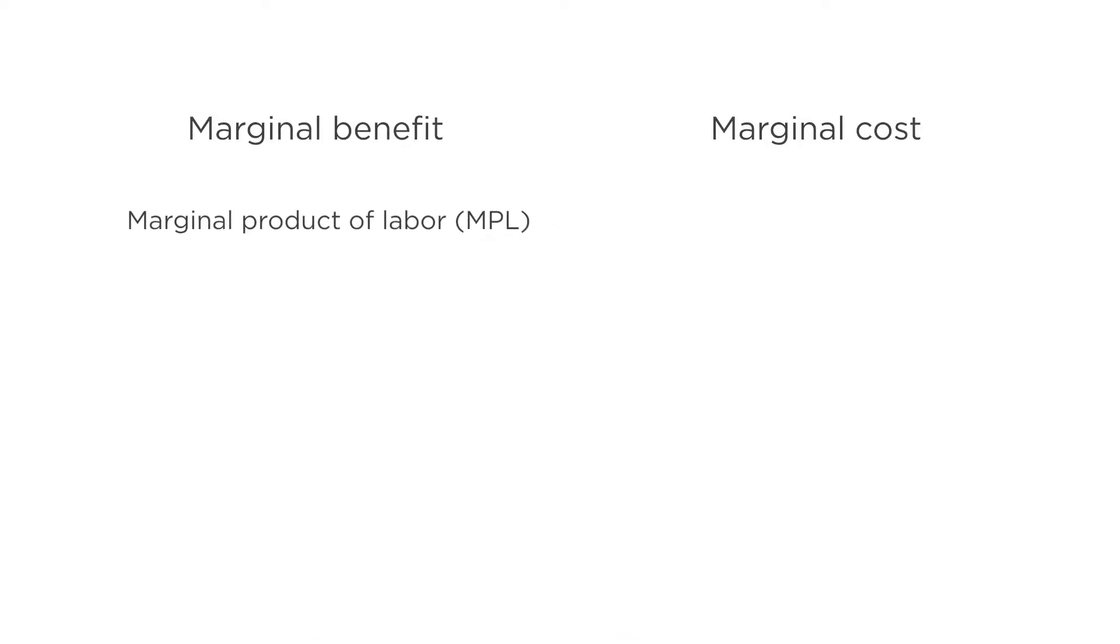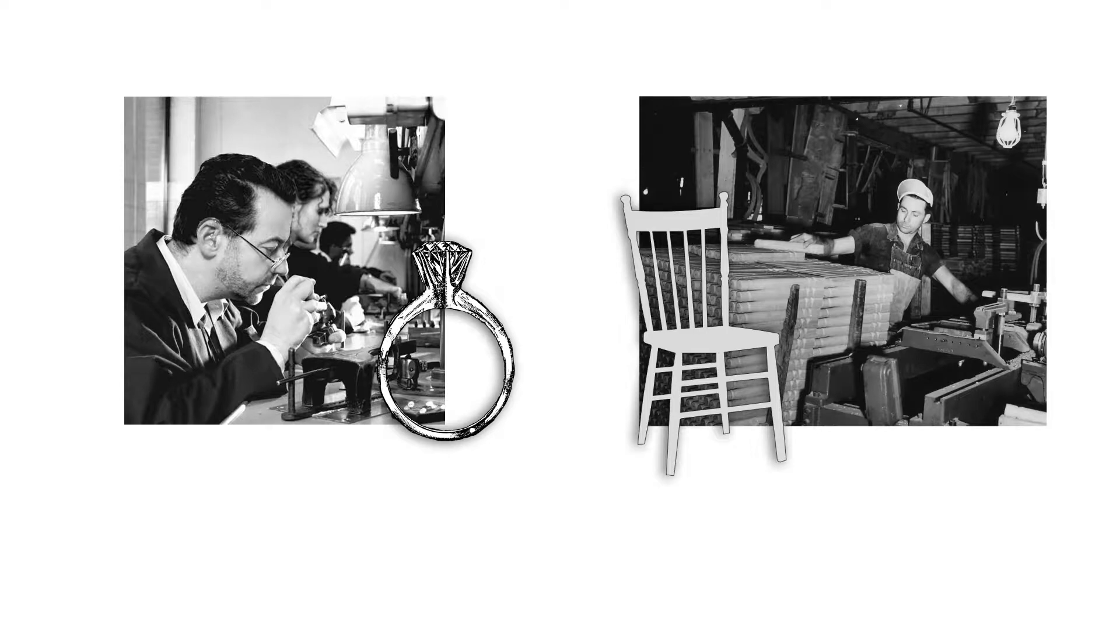Could this be the marginal benefit for the firm? Not so fast. Think about two firms. One that employs carpenters who make chairs, and one that employs jewelers who make diamond rings. Suppose the marginal product of the last hour of labor is one in both cases. An extra hour of work from one of the carpenters is enough to make one more chair, and an extra hour of work from one of the jewelers is enough to make one more ring.